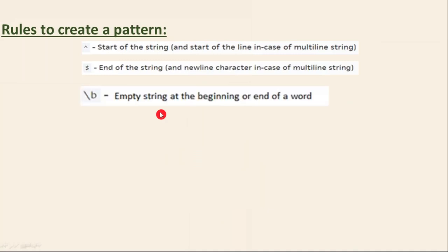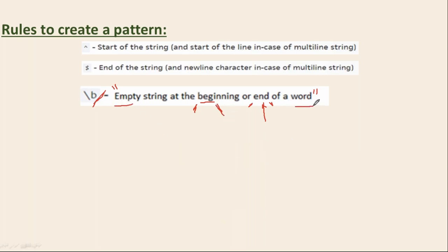Caret and dollar are very, very important. Now the next one is \b — empty string at the beginning or end of a word. Before using \b, let me explain: 'end' is a word because you have a space at the starting and ending of that string. But 'beg' is not a word because it has a start but no ending space. 'Empty' has a space at the end but not at the start, and 'world' has space at the start but not at the end.